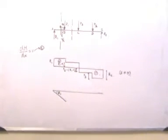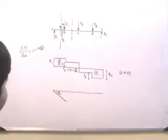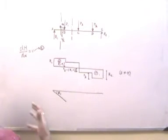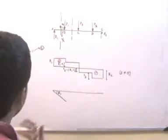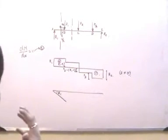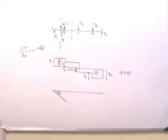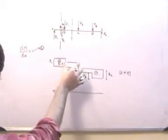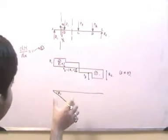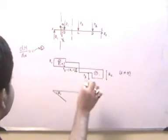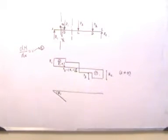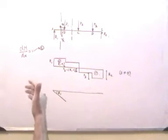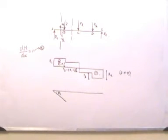At point B, there is a change in slope. From B to C, the bending moment diagram will again be a straight line because there is a constant value of shear force from B to C as well. But at B there will be a change in the slope of the bending moment diagram.